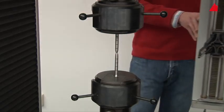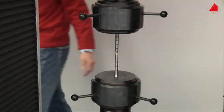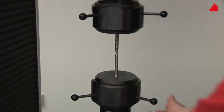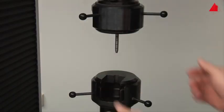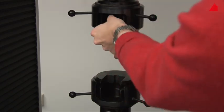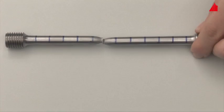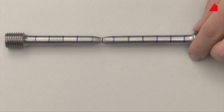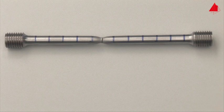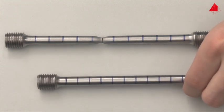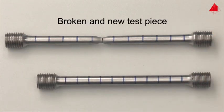In the last step, the tester swings the extensometer back into its resting position and removes the broken test piece. On the work table, he puts the fragments back together again. With the help of the distance marks, the percentage elongation after fracture can be determined. This is the permanent strain after fracture and amounts to about 30 percent in this example.